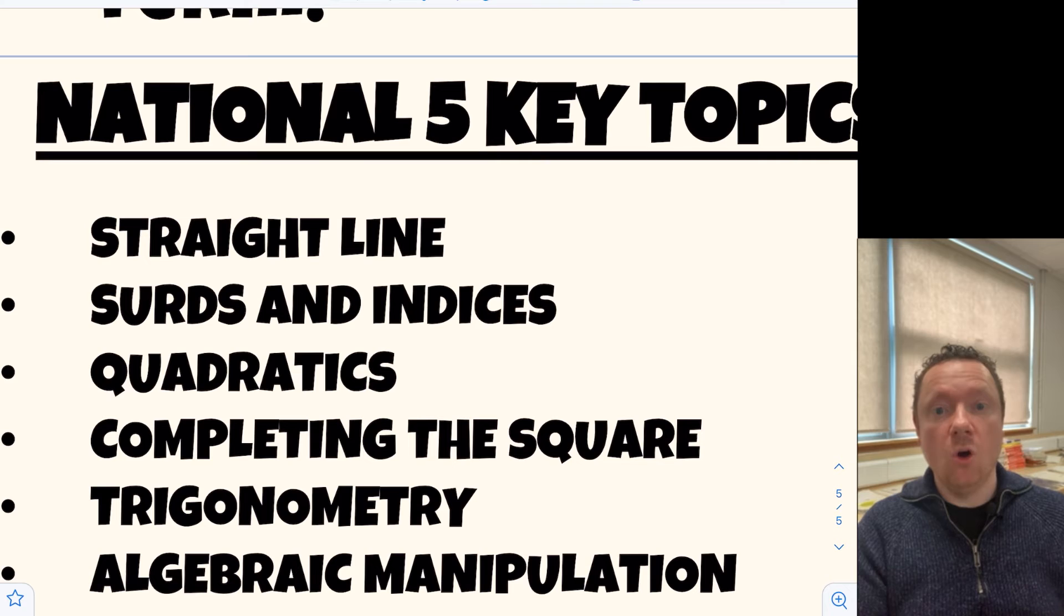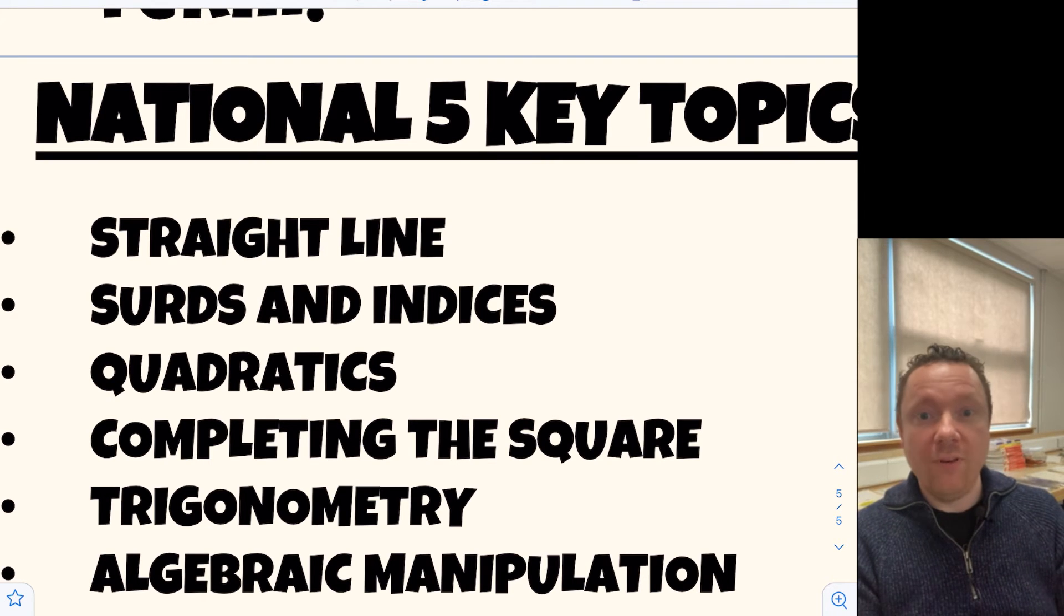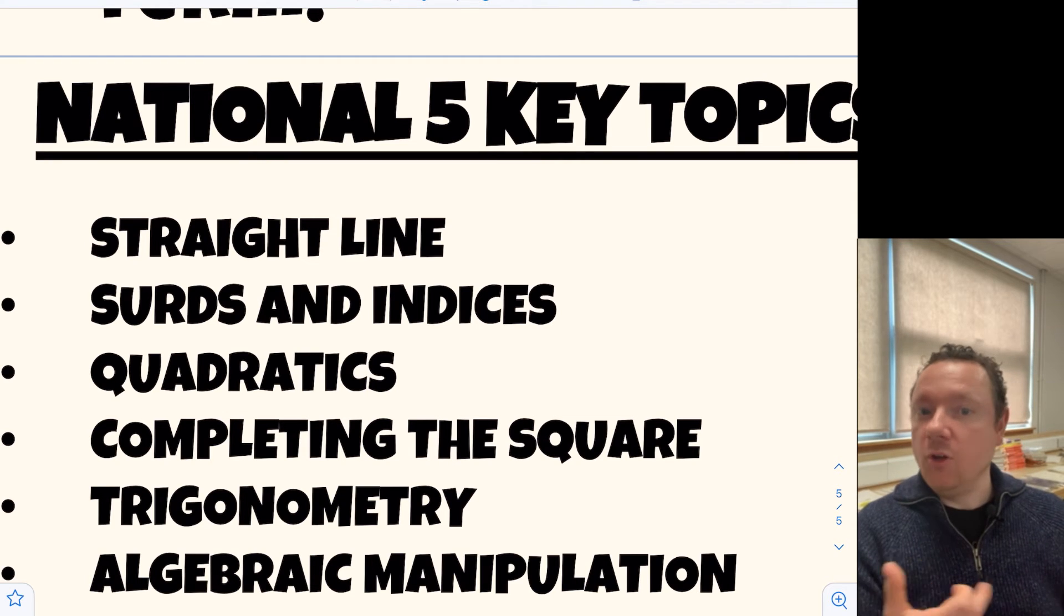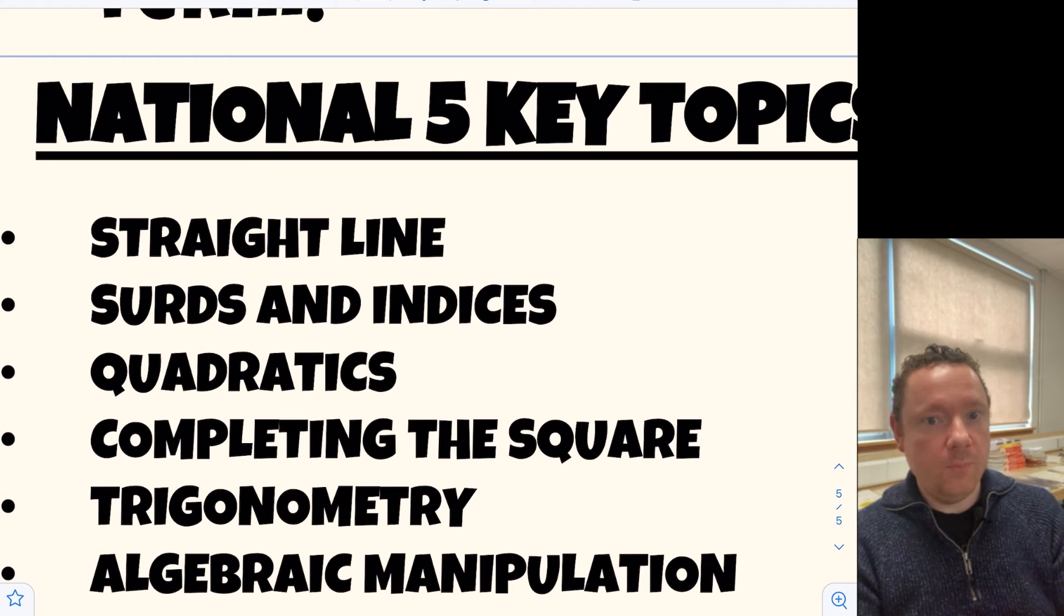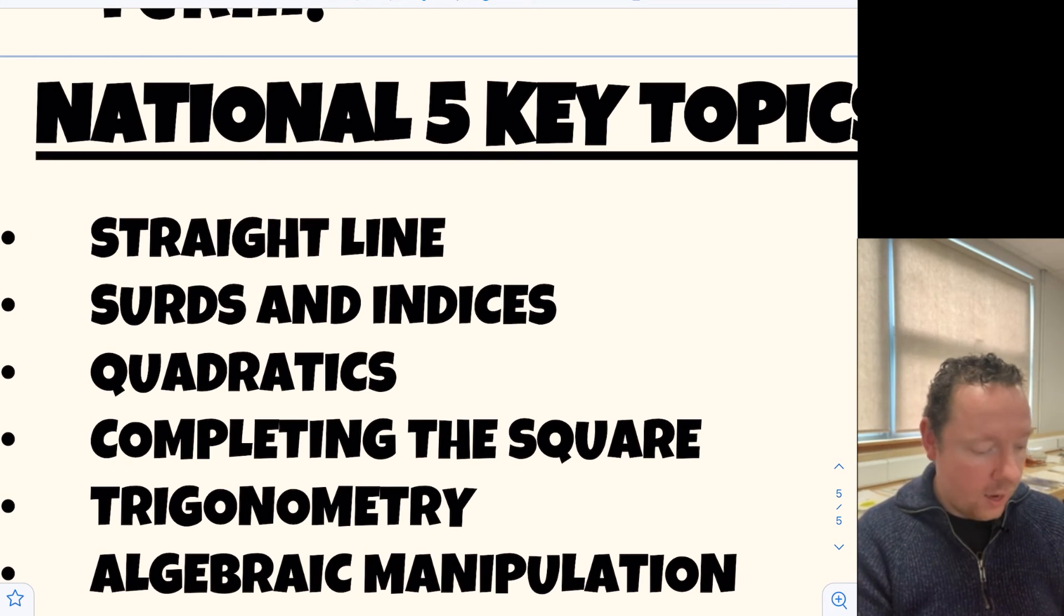The next thing that is assumed knowledge that comes up all the time, especially in the algebra section of higher maths, is surds and indices. Being able to go from one to the other. Things like eight to the third being the same as the cube root of eight. Eight to the minus third being the same as one over the cube root of eight. Going back and forth between those surds and index forms are very, very important. Make sure you're comfortable with that.